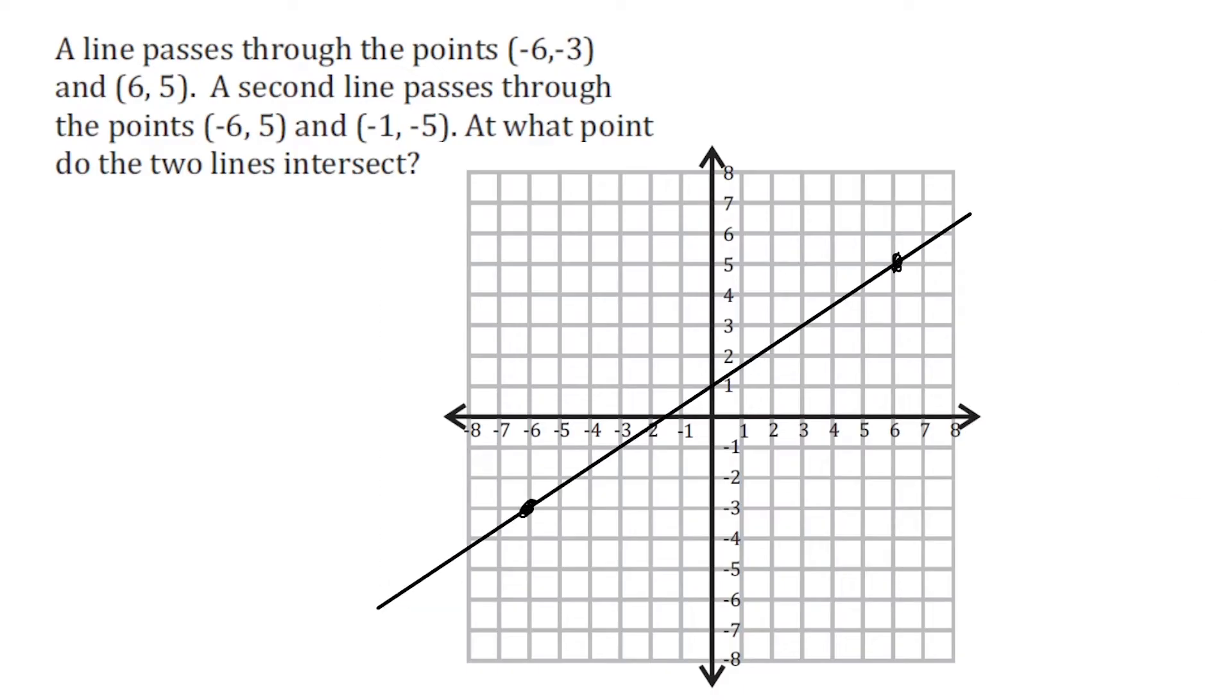Alright, now we're going to plot the other two points, which is negative 6, 5. So we're going to go to negative 6, positive 5, and negative 1, negative 5. Then we're going to go ahead and make our line here.